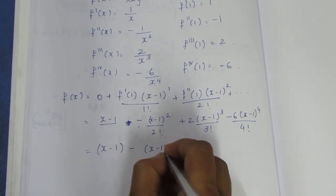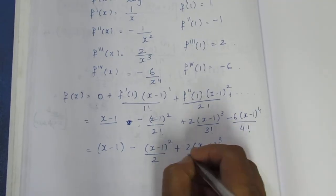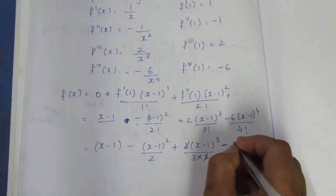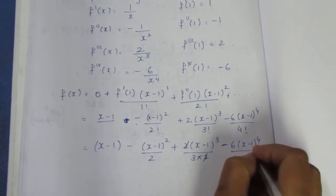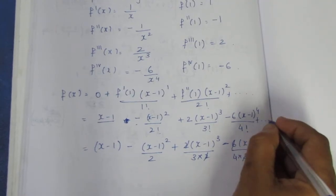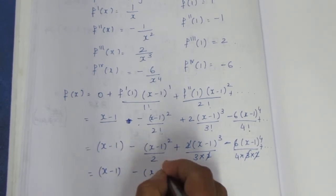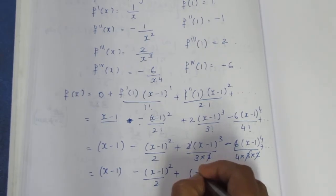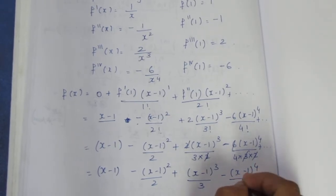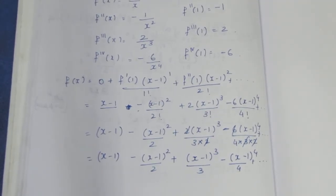Simplifying by canceling common factors: 2 cancels in the third term, and 3 times 2 cancels in the fourth term. The final answer is: log x equals (x minus 1) minus (x minus 1) squared by 2, plus (x minus 1) cubed by 3, minus (x minus 1) to the power 4 by 4, plus dot dot dot. This is the final answer for the sum. Thank you.